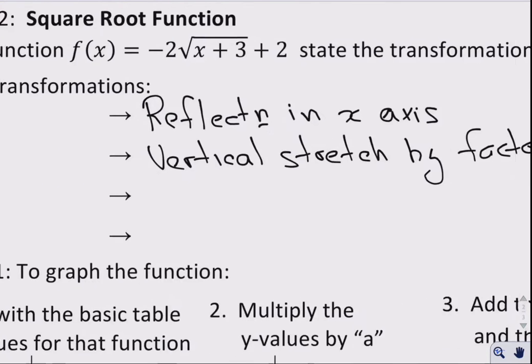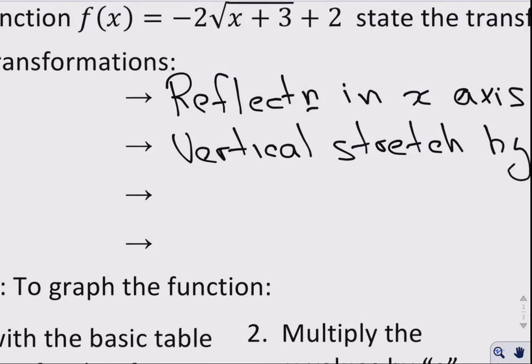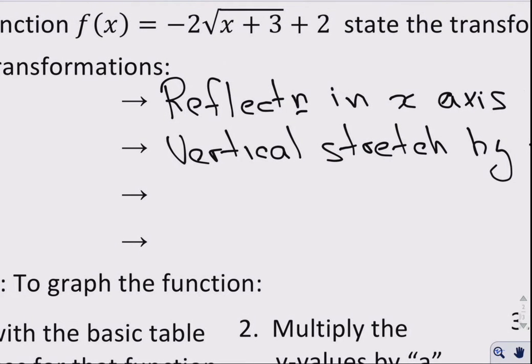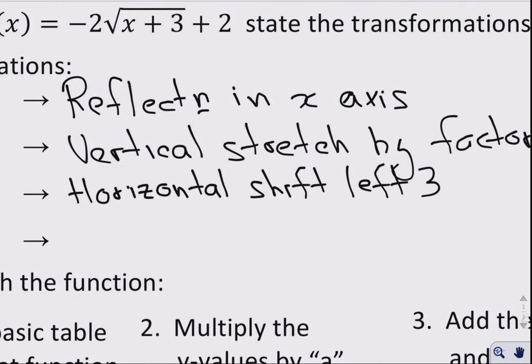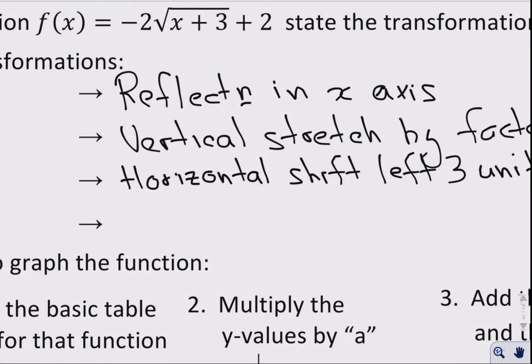The positive 3 means we have a horizontal shift, and that is to the left, 3 units. And the plus 2 means we have a vertical shift up, and that's 2 units.